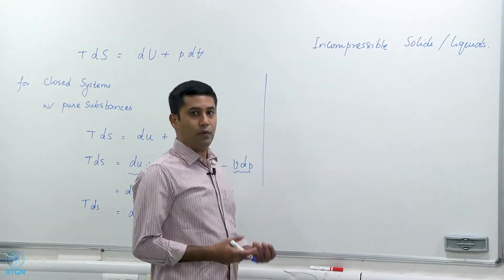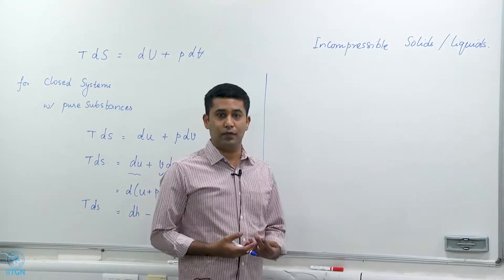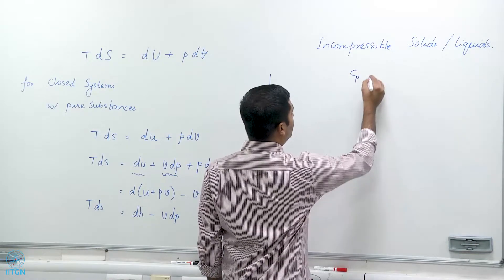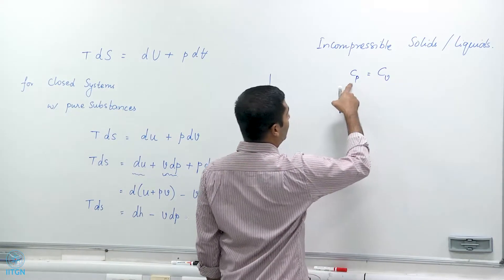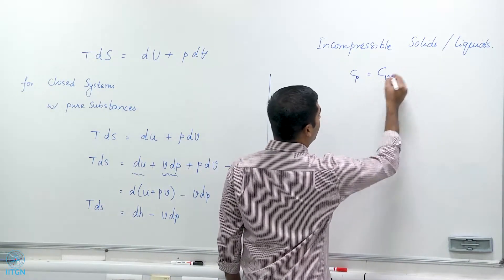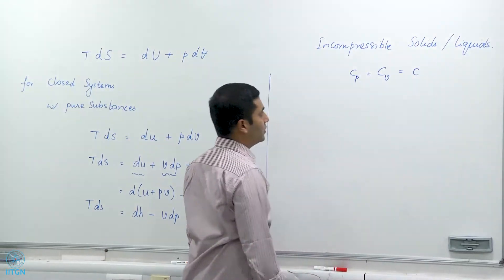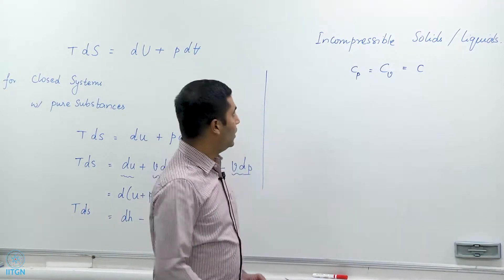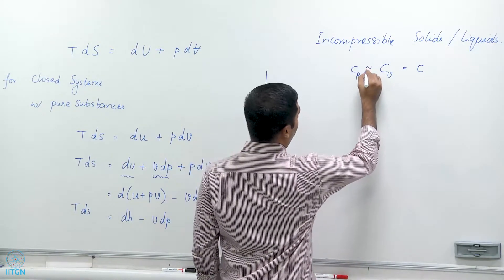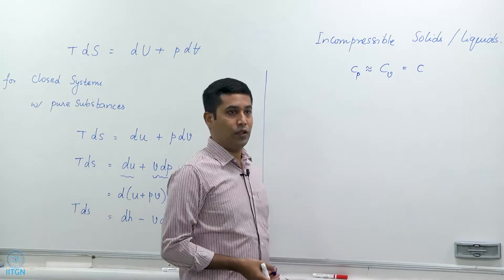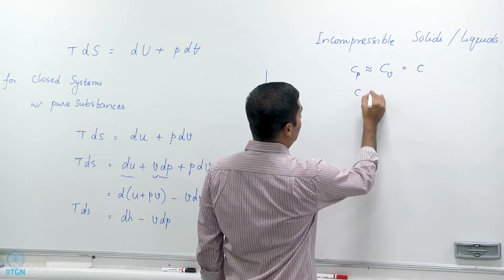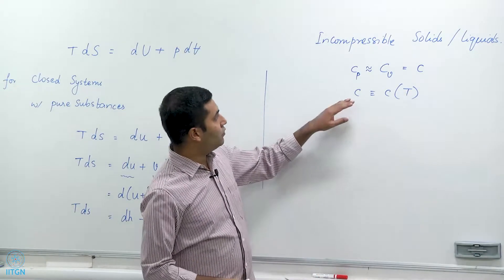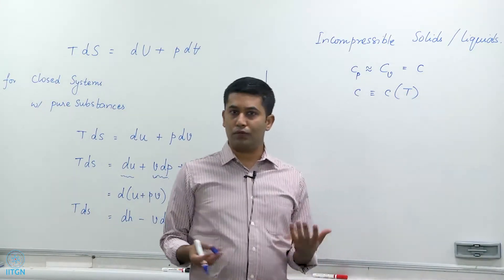Recall from our earlier discussion about specific heats of incompressible solids and liquids that because of their incompressibility, the specific heat at constant pressure and at constant volume are equal, and they are each just called c — the specific heat without specifying whether it is at constant volume or constant pressure. These are not exactly equal but approximately equal, and c is mainly a function of temperature and not so much a function of pressure.